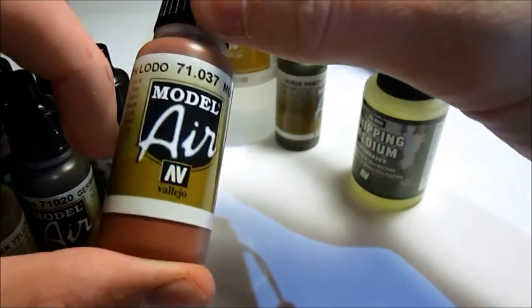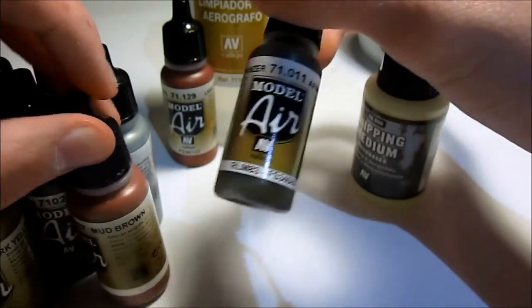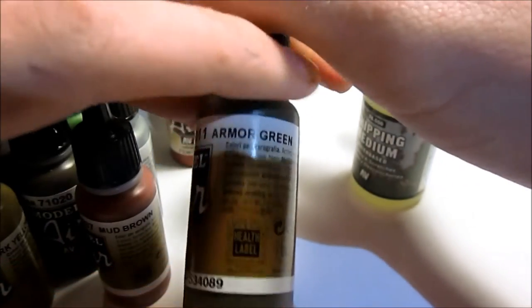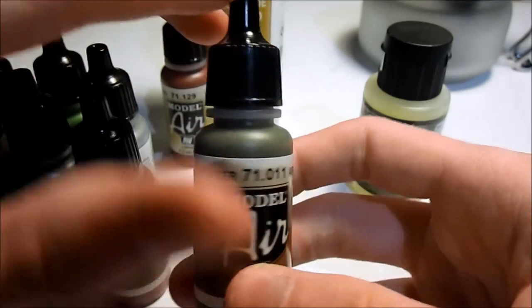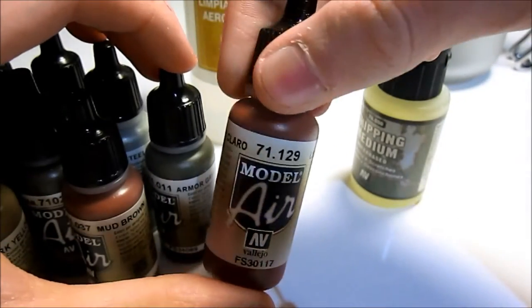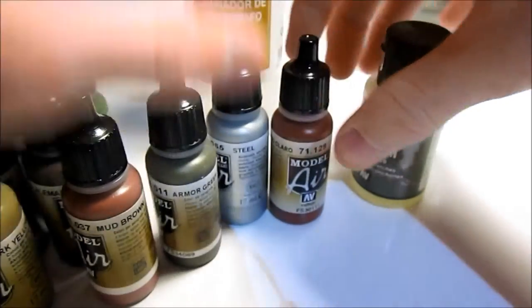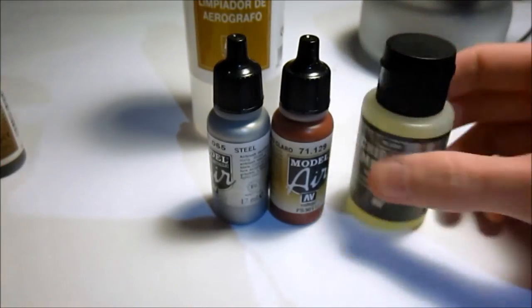Armor green which is also for the camouflage color for Germans, and also a light rust. These rust and steel I'll use together with this chipping fluid.